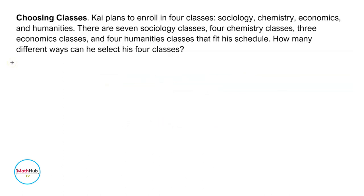Choosing classes. CHI plans to enroll in four classes: Sociology, Chemistry, Economics, and Humanities. There are seven Sociology classes, four Chemistry classes, three Economics classes, and four Humanities classes that fit his schedule. How many different ways can he select his four classes?